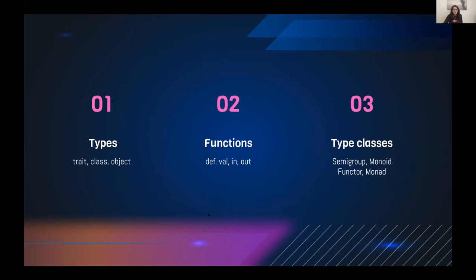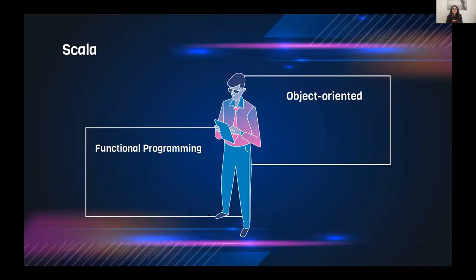We're also going to see how to define type classes, and I'll mention some popular algebraic data structures like semi-group, monoid, functor, and monad. To start, Scala combines two programming paradigms: object-oriented and functional programming. Object-oriented programming is based on the concept of objects, which are containers for attributes and data, and operations — basically the methods.